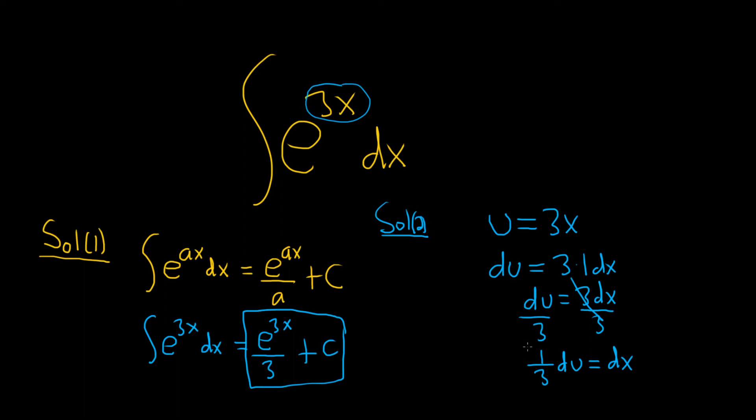All right, now we can make our substitution. So this is equal to, the dx is 1 third du. So I'm going to go ahead and replace the dx and pull the 1 third out. So we have 1 third integral, and then here we have our du. And then we're left with e, and what was 3x? Well, that was u, so e to the u.